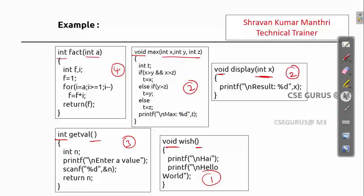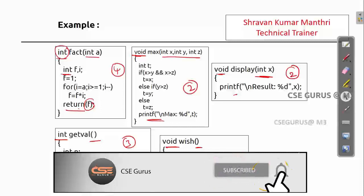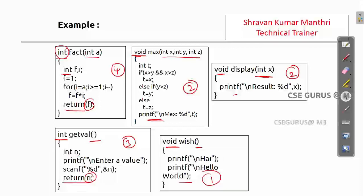If the return type is void, there is no return statement inside the function. If the return type is int, there must be a return statement returning an integer value. If it is float, return a float; if character, return a character. For example, int getvalue() returns n, which is an integer. Always match the return type to what is actually being returned to avoid syntax errors.